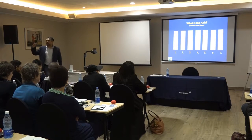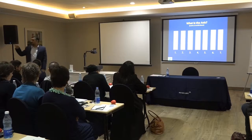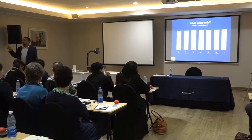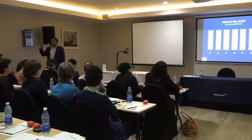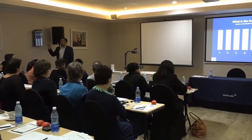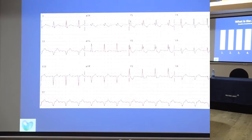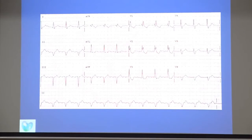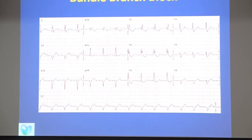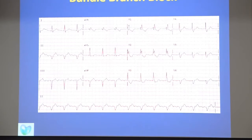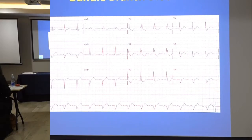Left axis deviation on an ECG normally indicates that the left anterior fascicle of that left bundle has been damaged. You have lead 2 pointing downward, so you have left axis deviation. You know what the rate is. Is this patient in sinus rhythm, yes or no?